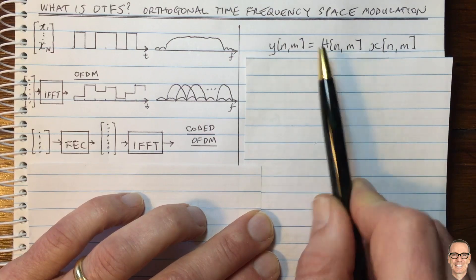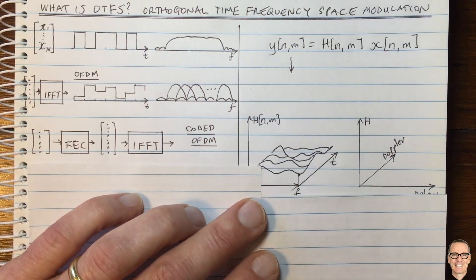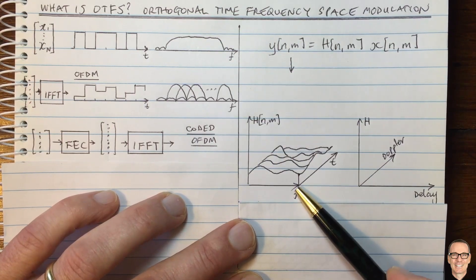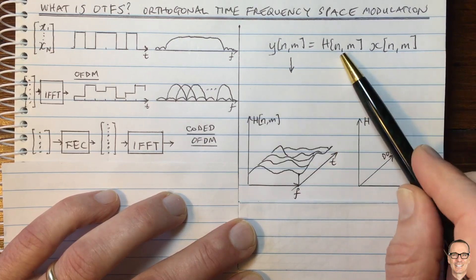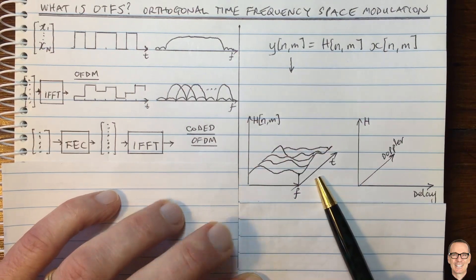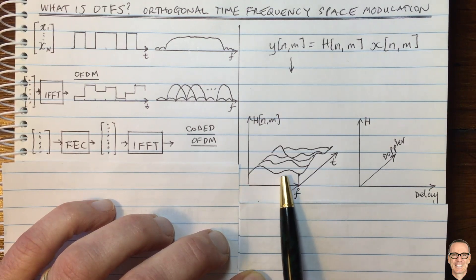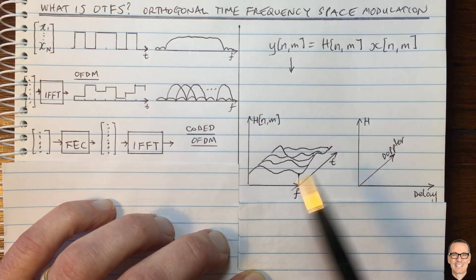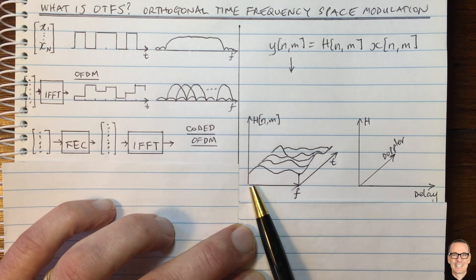Let's think about the channel in terms of frequency and time. The frequency corresponds to M and time to N. Here we can see the subcarriers across the frequency band, some with good gain and some with lower gain, and as time goes on all of those gains change across the subchannels.